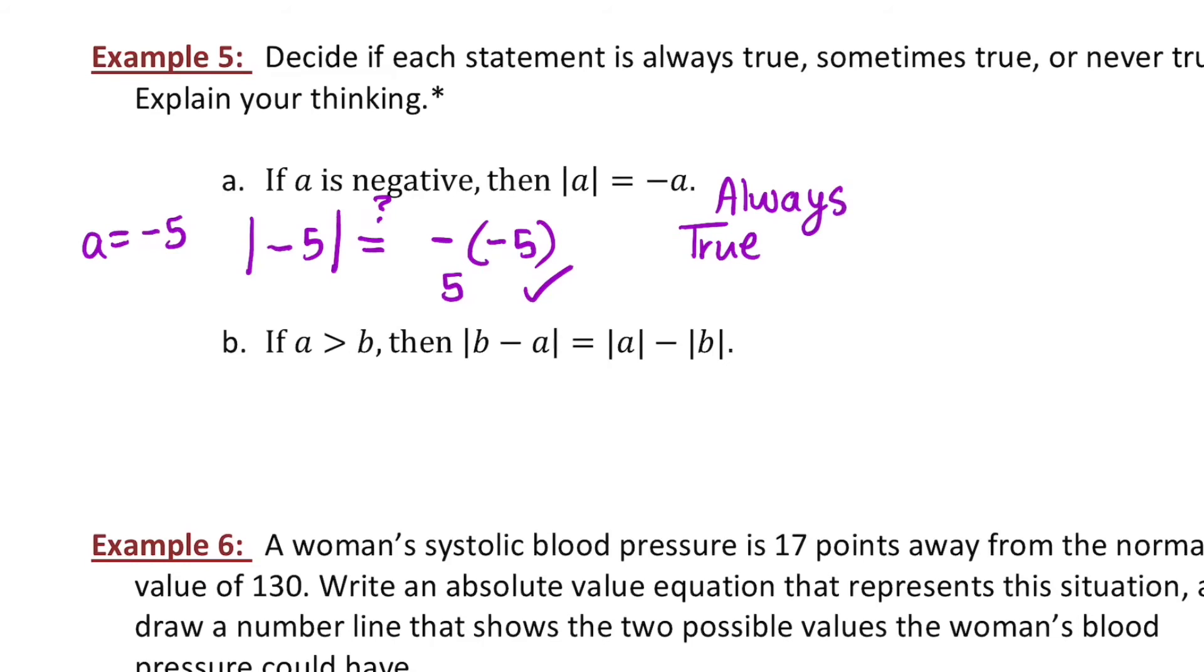On B, it looks a little bit more complicated. So if A is greater than B, then the distance between B and A is the same as the absolute value of A minus B. So let's pick some values again. Pick an A value that's greater than your B value. I'm going to go with 3 and 2. And let me plug those in and try it. So if I plug those in, I'm going to have the absolute value of 2 minus 3, seeing if that is equal to the absolute value of 3 minus the absolute value of 2. So if I do that, I'll get the absolute value of negative 1, which is going to be 1, equals 3 minus 2, which is also 1. So it's at least sometimes true, because it was true in that case.